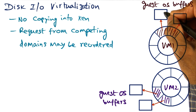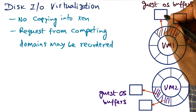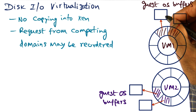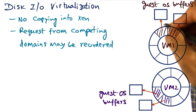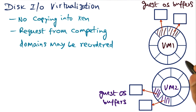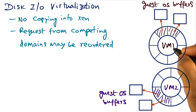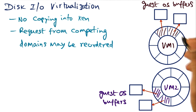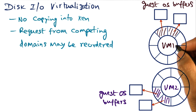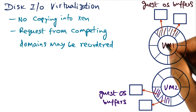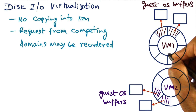These descriptors contain pointers to the guest operating system buffers where the data is already contained if the transfer has to go into the disk, or a placeholder for the data to come in from the disk. The philosophy is asynchronous IO: enqueuing descriptors into the IO ring by the guest operating system happens asynchronously with respect to Xen enqueuing responses back for prior requests from that VM.